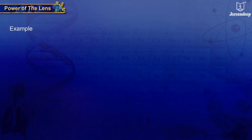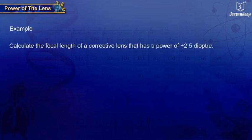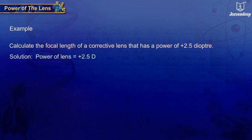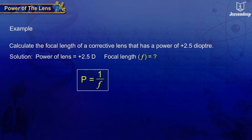Example: Calculate the focal length of a corrective lens that has a power of +2.5 diopter. Given: power of lens = +2.5 diopter. To calculate the focal length, we use the formula P = 1/f, or focal length f = 1/P.